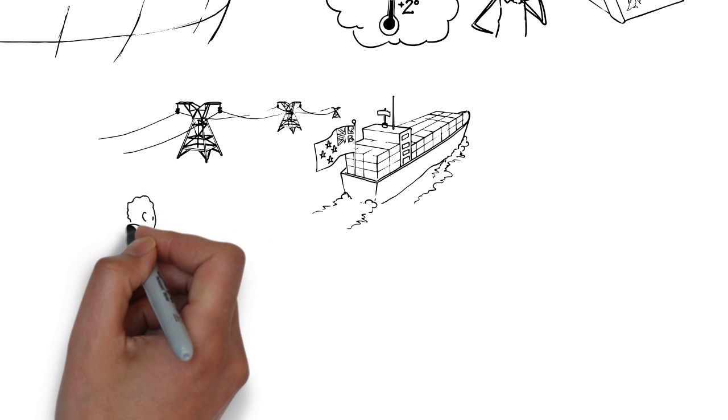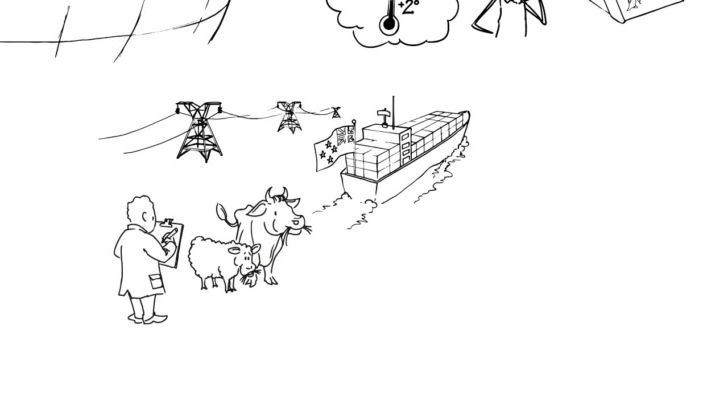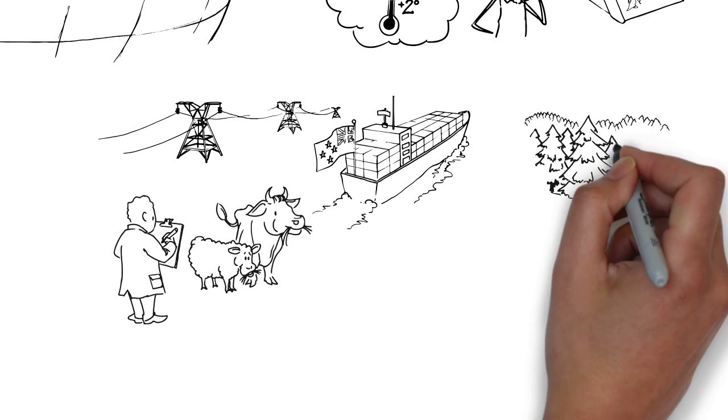We have an efficient primary sector and world-leading research aimed at finding new technologies to reduce agricultural emissions. And our land is well-suited to forestry, which can offset some of our emissions.